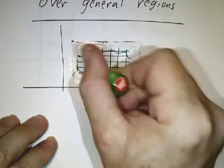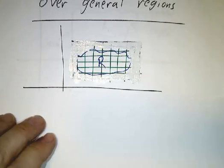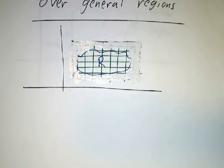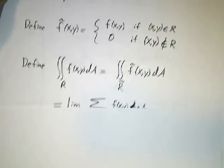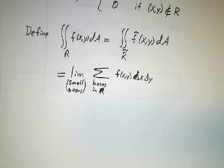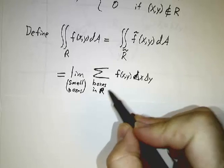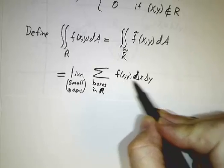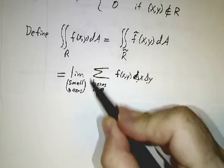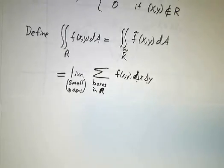All you really have is the region r and the boxes. In the region r, the function we're adding up is f. So the way you get an integral over a general region is just like the integral over a rectangle: you chop the region into little boxes, take the value of the function in each box times the area of the box, add them all together, and then take a limit as you chop things into smaller and smaller boxes. That is the definition of an integral over a general region.